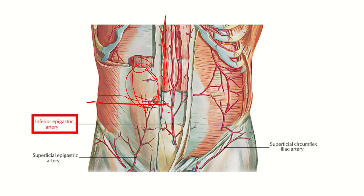Here you can see the midline, the left side, and the right side, with the same structures on both sides. Within the rectus sheath on this side, we can see a blood vessel — this is the inferior epigastric artery. When the incision is extended medially, this artery, which runs within the rectus sheath and the rectus abdominis muscle, is injured, causing the bleeding.